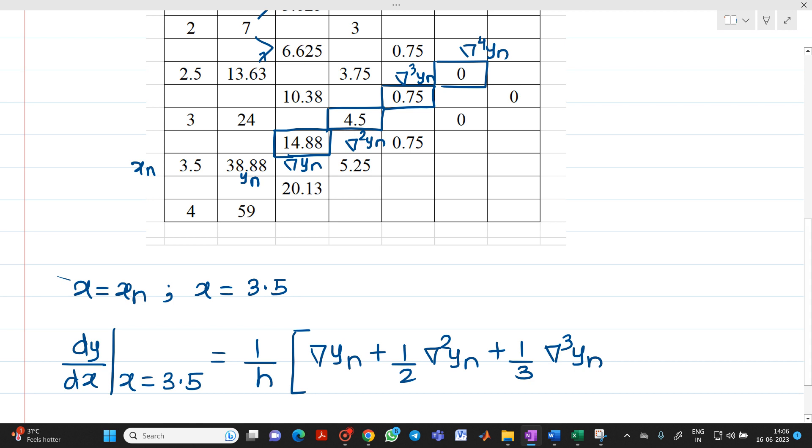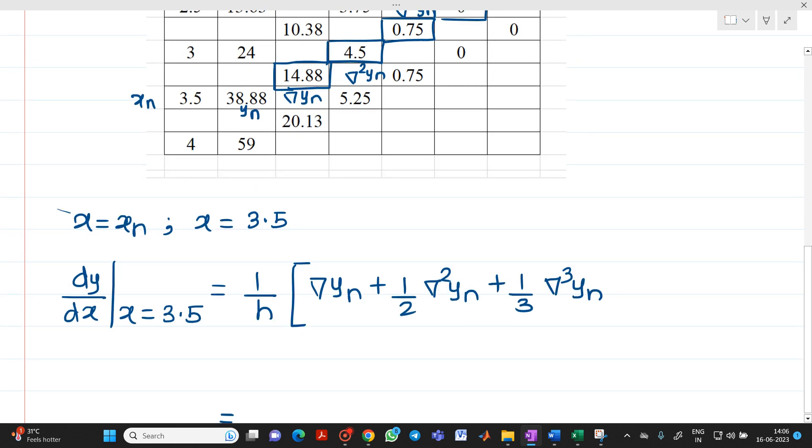So we know at x equal to xn, that is at x equal to 3.5, we have to find this out. So dy by dx at x equal to 3.5 will be equal to 1 by h del yn plus 1 by 2 del square yn plus 1 by 3 del cube of yn. How to find out h?